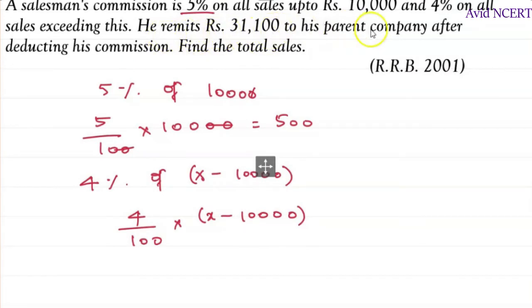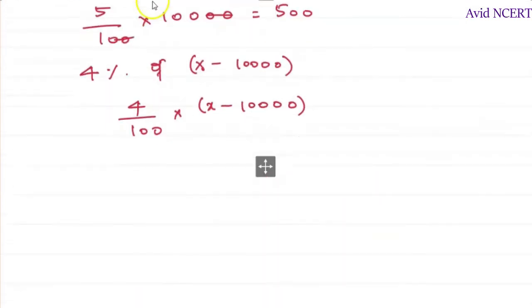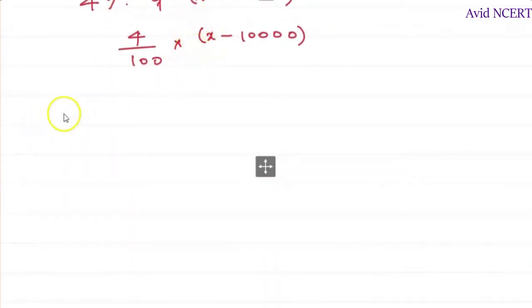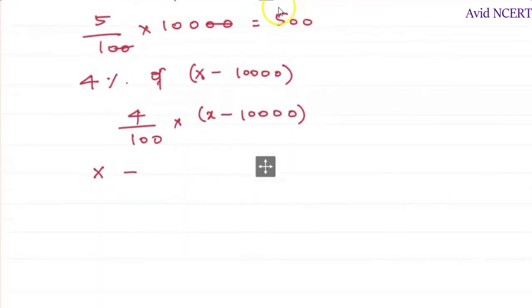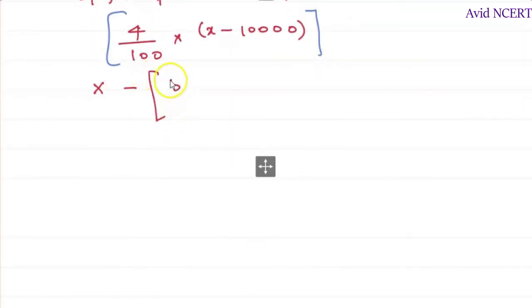He remits 31,100 to his parent company after deducting his commission. So find the total sales. Let this total sales be x. So it is x minus the commission, which is 500 plus 4 by 100 times x minus 10,000, equals 31,100.